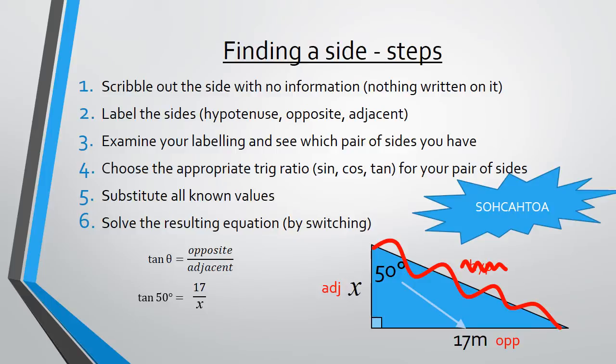Now we're going to solve this equation. And we're going to do it by switching, same as we did in the previous slide. We're going to switch the x and the tan 50. And that should give us x equals 17 over tan 50. And you need to be careful when you type that in the calculator. If you don't close the brackets on the 50 degrees on the denominator, your calculator will give an error. But if you have done it correctly, you should get 14.26 to two decimal places.